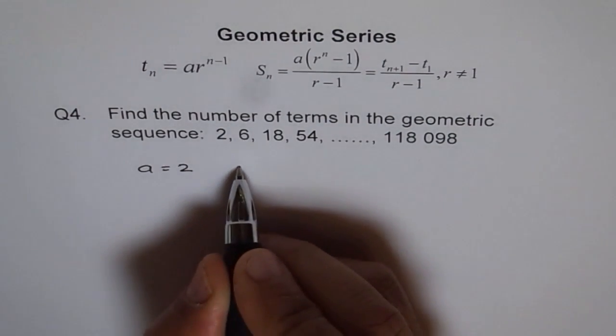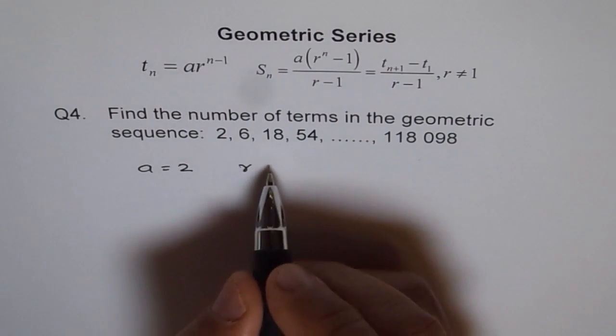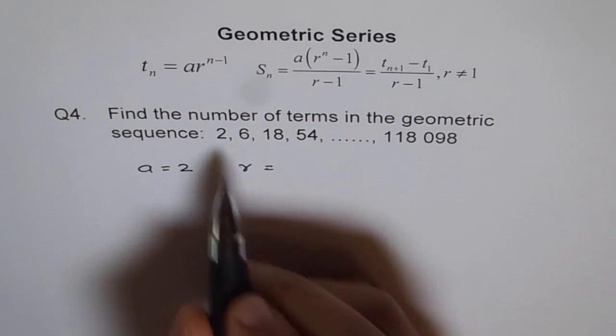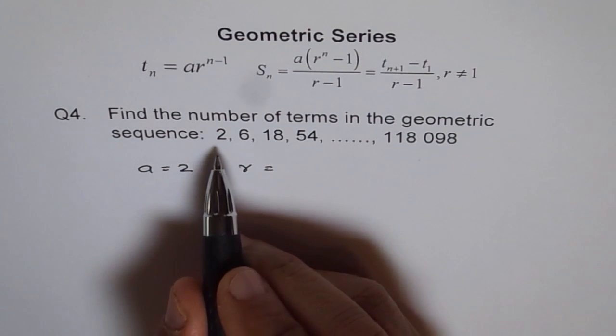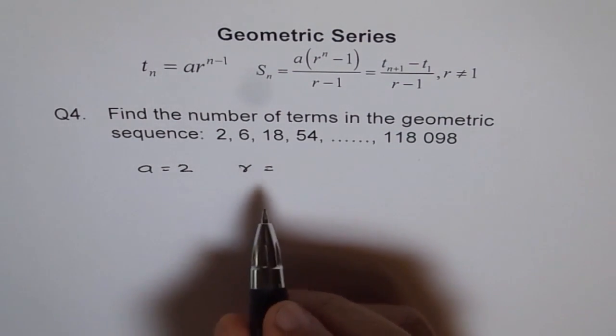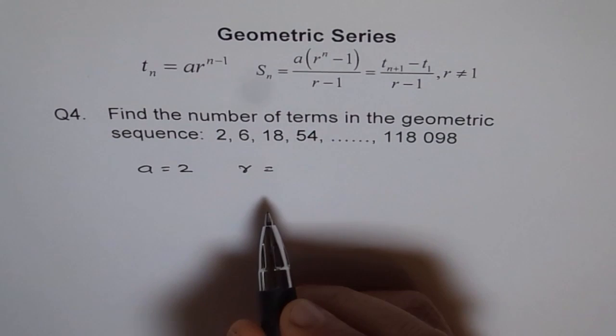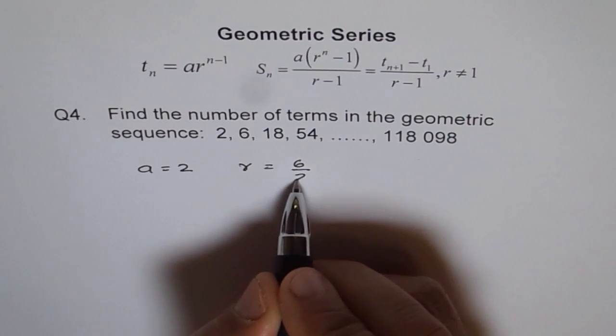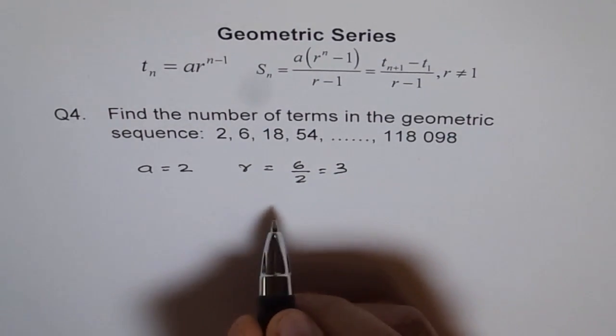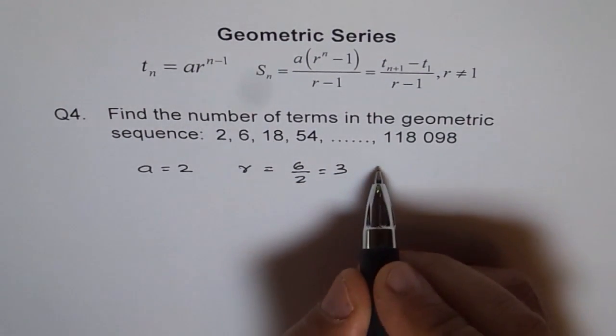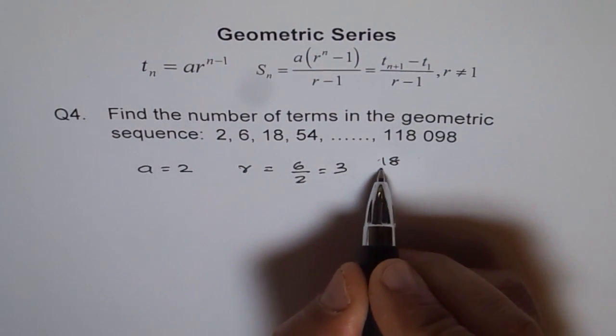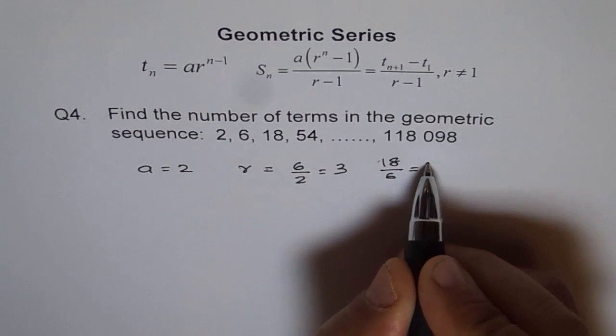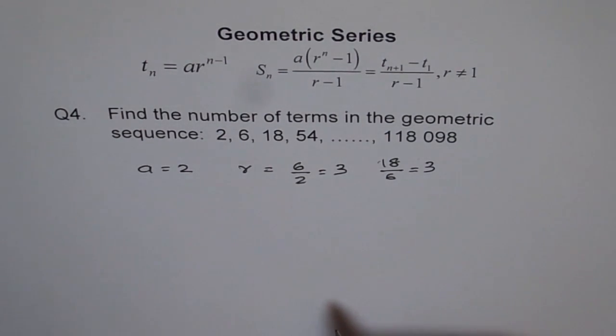And what is r for us? r we can find as a ratio of consecutive or the terms which comes next to one another, successive terms. So it is 6 divided by 2 to find r, which is 3. And let's check. Is 18 divided by 6 also 3? Yes. It is geometric series with r equals to 3.